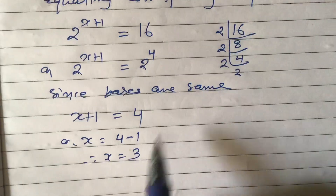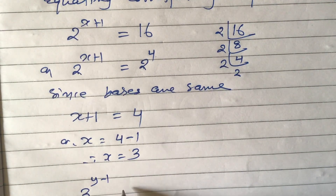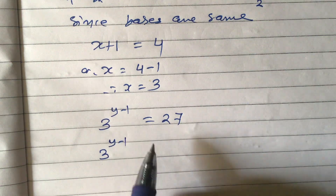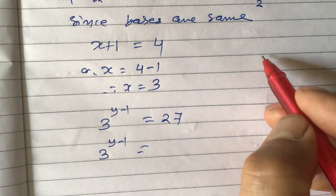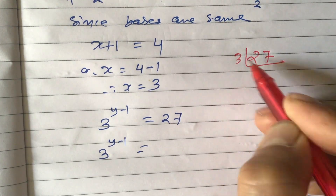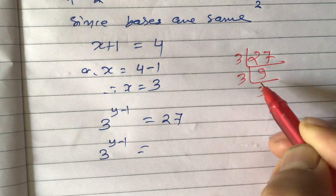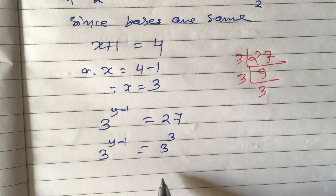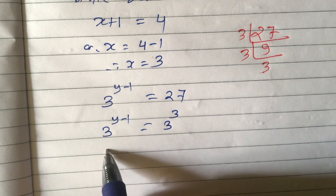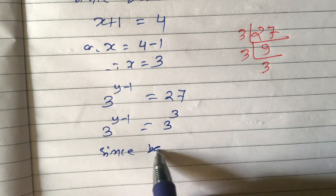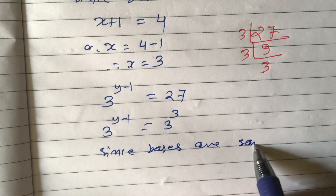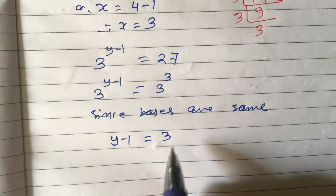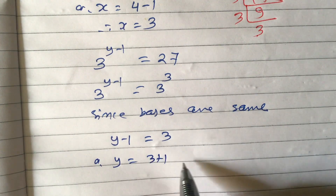Similarly, equating the second components: 3^(y-1) equals 27. Finding the prime factors of 27: 3×3×3, so there are three 3s, meaning 27 equals 3^3. Since the bases are the same, we equate powers: y minus 1 equals 3, so y equals 3 plus 1. Therefore y equals 4.